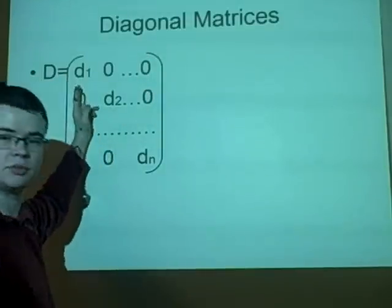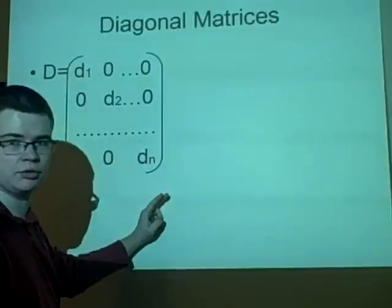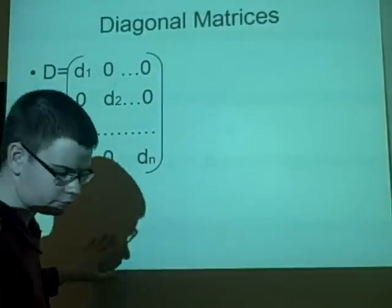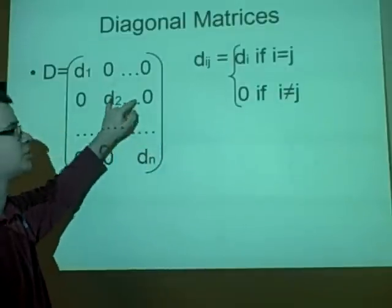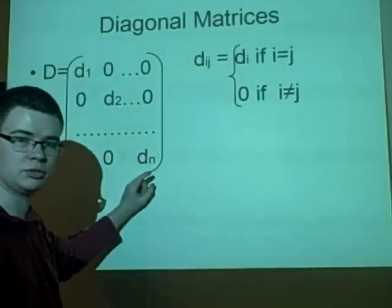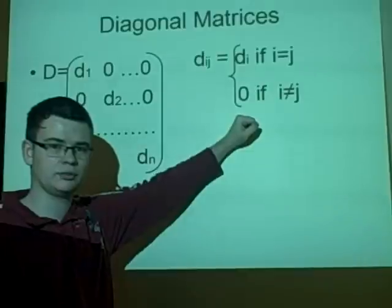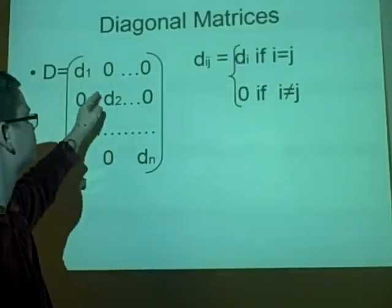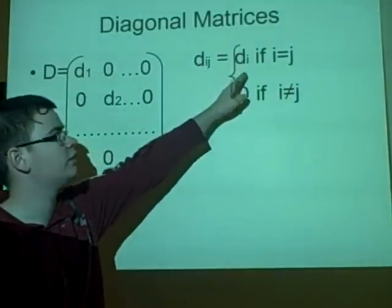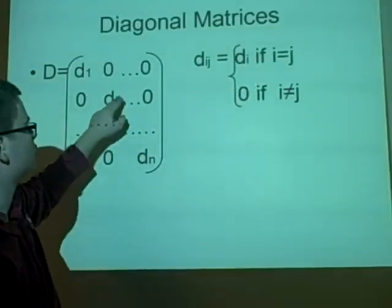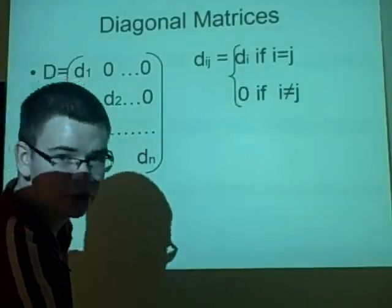This is where you have a matrix which is n by n, so it's square, and all the diagonals have values in and everything else is just zero. We did this last time with an identity matrix where all the diagonals are equal to one. In this case we have d1, d2, all the way up to dn because it's an n by n, and we've said that dij equals di if i equals j, and zero if i does not equal j. That's the definition of a diagonal matrix.